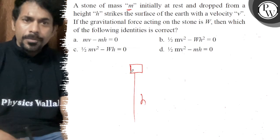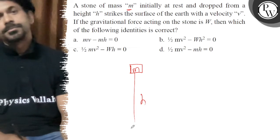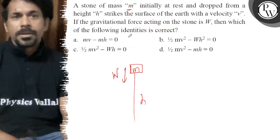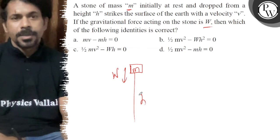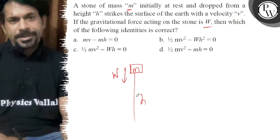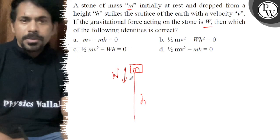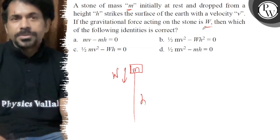The stone is dropped from height h, and W is the gravitational force. Which of the following is correct? If we can see here, v is the velocity at which it strikes the surface.